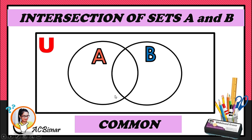You're going to write the common elements on the intersection of circles A and B. The shaded portion — that overlapping region — will be your answer for the intersection of sets A and B.